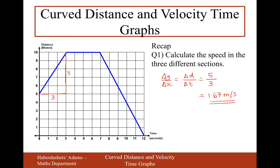We find the speed on a distance time graph by working out what the gradient is — the difference in y divided by the difference in x. For the second section of the graph, we have a flat line, which represents no speed — the distance from a fixed point has not changed, so speed is 0. For section 3, the difference in y is from 10 to 0, that's 10, and the difference in x is from 7 to 12, that's 5. So 10 divided by 5 is 2 metres per second.